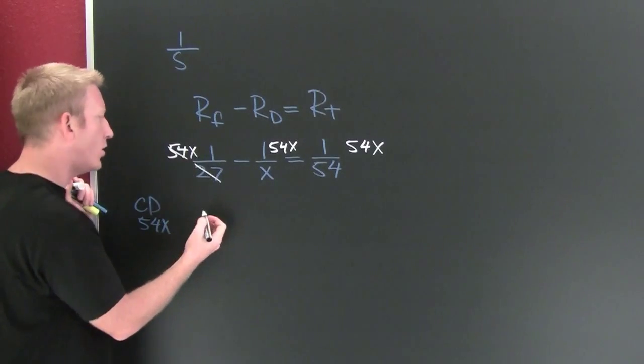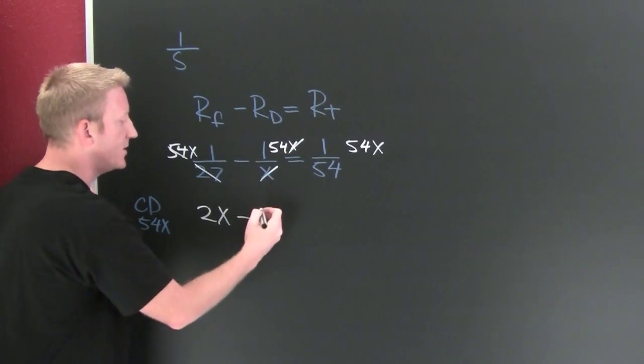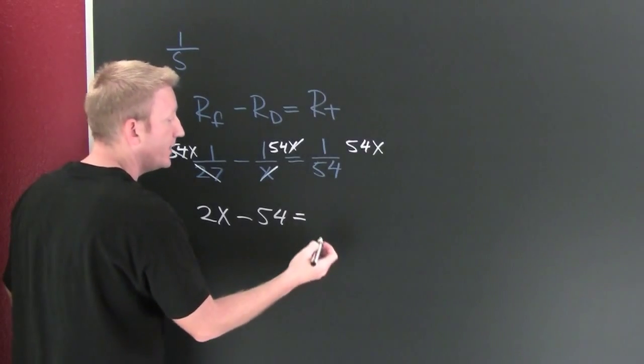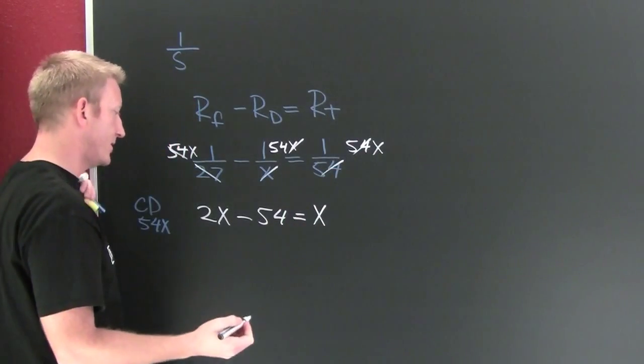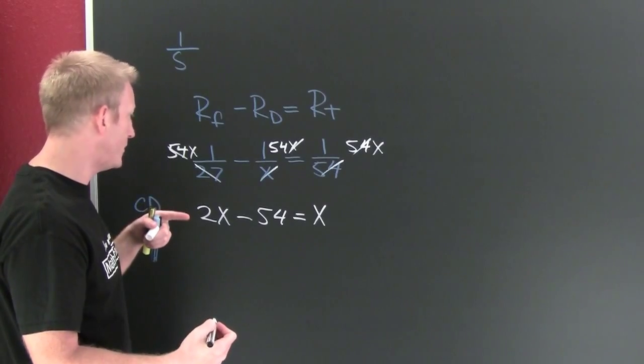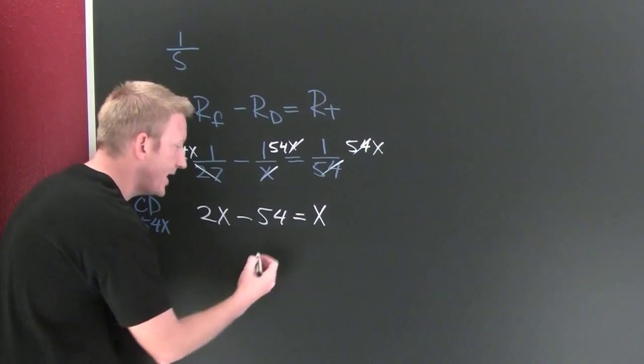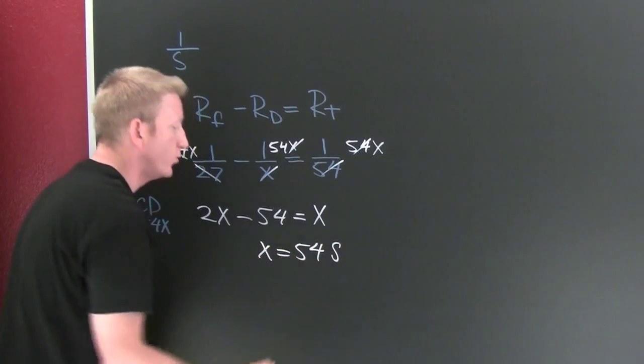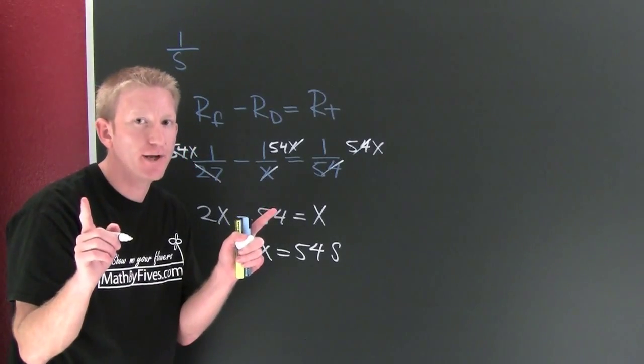Here they fight. And I have 2X minus 54 is equal to, wait for it, X. Oh no! Add the 54, subtract the X, and X turns out to be 54 seconds. Whoa, whoa. Wait a minute. These numbers are quite curious.